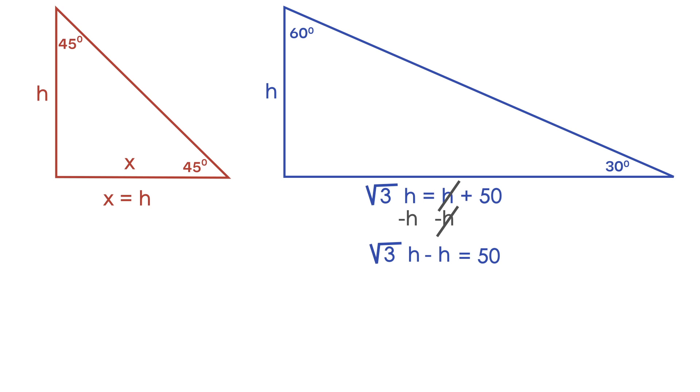Now we can factor out an h on the left side of the equation because both terms have an h in common. And once we do this, we have an h and inside the parentheses, we have a square root of 3 and a minus 1 left over. The right side stays the same, we still have our 50.